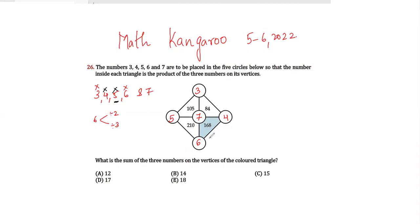Now the question is asking what is the sum of the three numbers on the vertices of the colored triangle. So this is the colored triangle. What will be the sum of the digits? It will be 6 plus 4 plus 7, which is 17. So my answer will be option B, which is 17. I hope you liked my video, please subscribe to my channel, thank you.